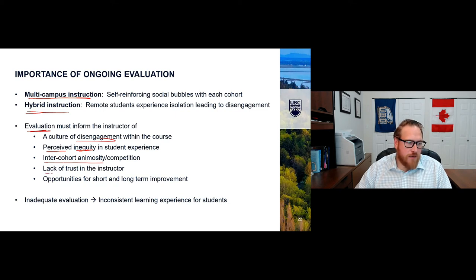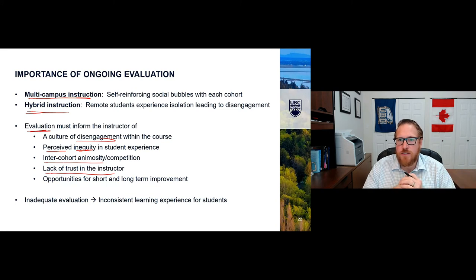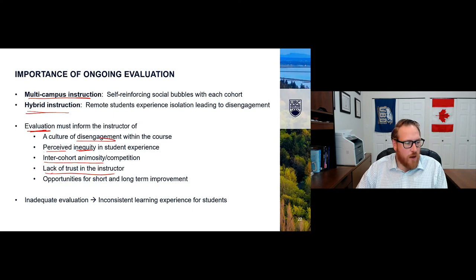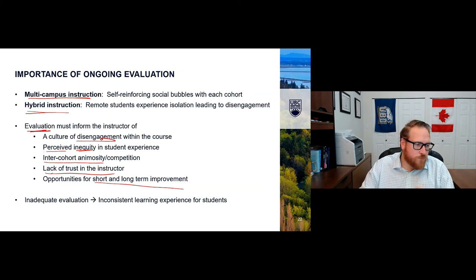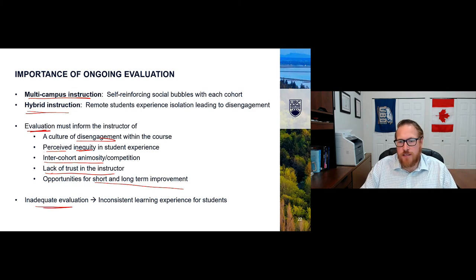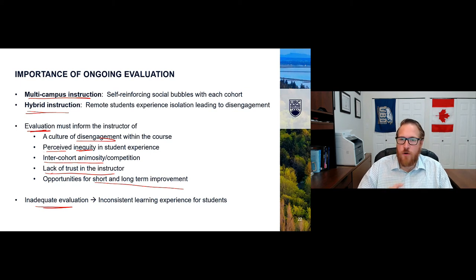Evaluation can help you understand if there's some sort of perceived inequity — going to Tamara's comment, if the instructor is focusing more on remote students, in-person students may feel they're getting the short end of the stick. It can also help identify inter-cohort animosity — it's not uncommon for two cohorts to become rivals, with one campus thinking they're better or worse, or remote students in hybrid instruction feeling like second-rate students. It can also identify a lack of trust with the instructor, and opportunities for short-term or long-term improvement. Inadequate evaluation can lead to inconsistent learning experiences for students.